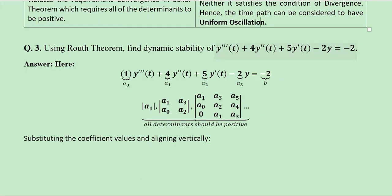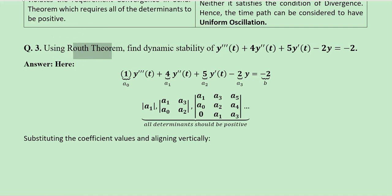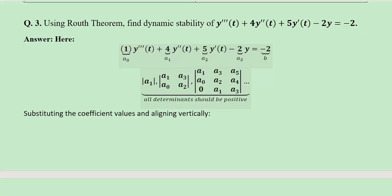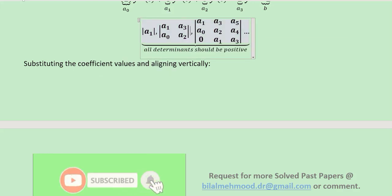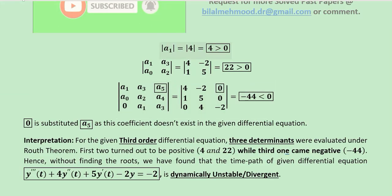The next question is about the dynamic stability of a third-order differential equation, using the Routh theorem. We extract the values of a0, a1, a2, a3, and b from the equation, making 3 determinants corresponding to the order of the equation. The first determinant is a1, which is positive. The second determinant, solved by substituting the extracted values, is also positive — so far there is no sign of divergence.